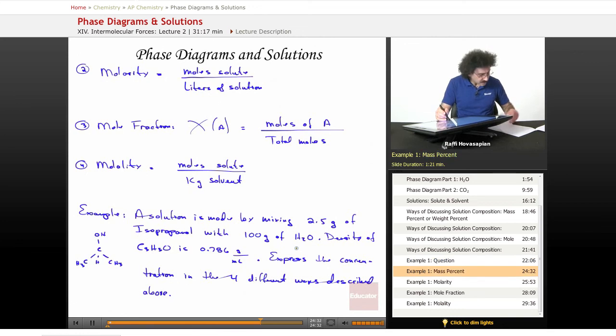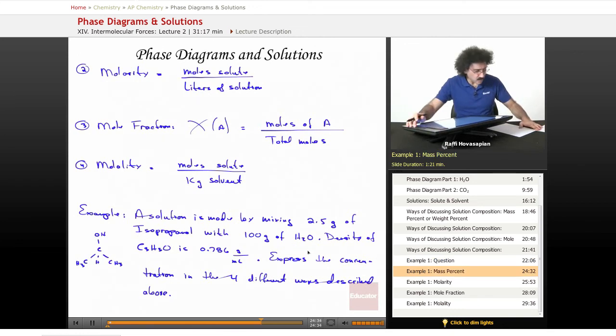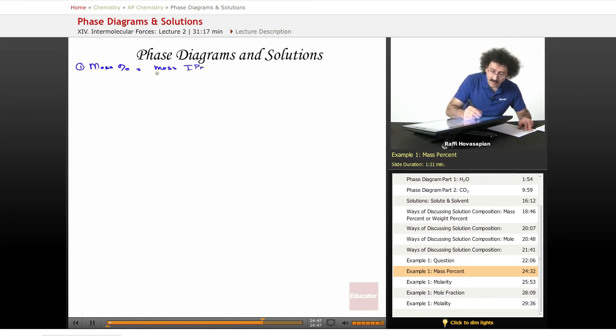Let's go ahead and do our first one, which is mass percent. Number one, mass percent. We said the mass percent is the mass of the isopropanol over total mass times 100.